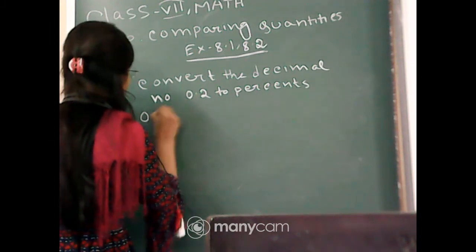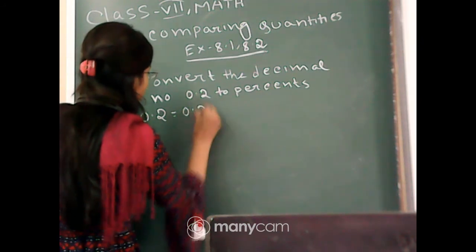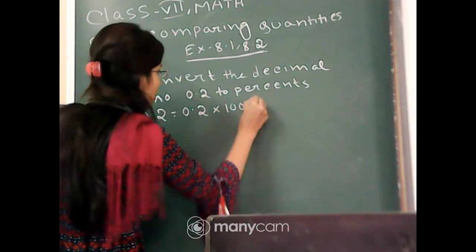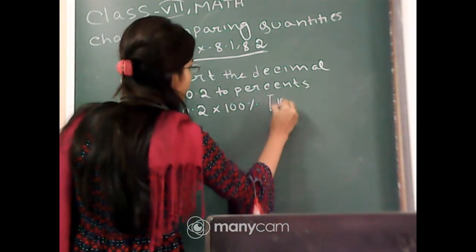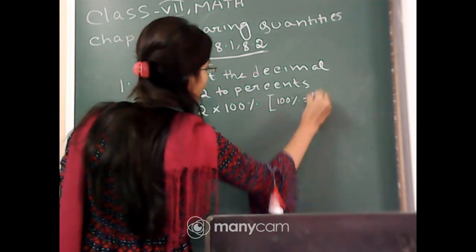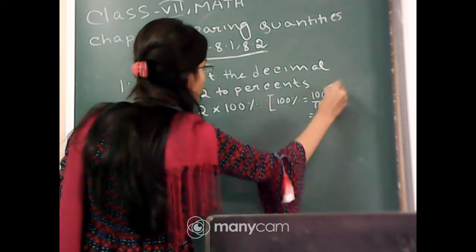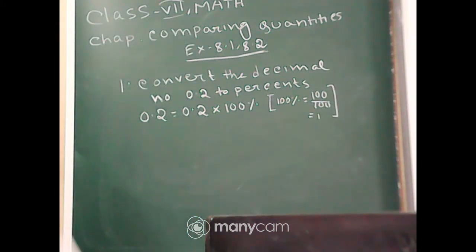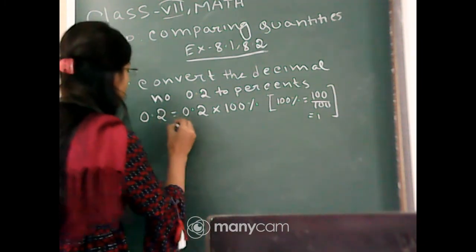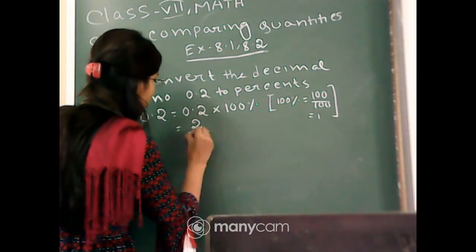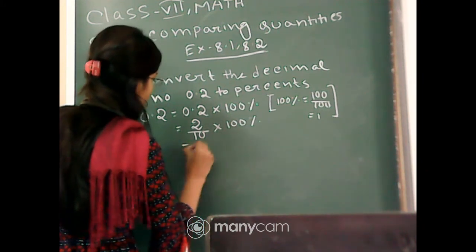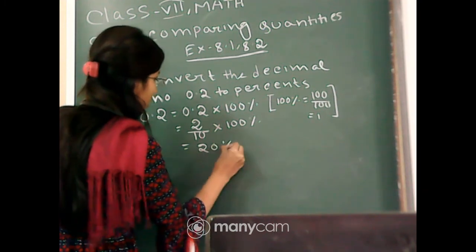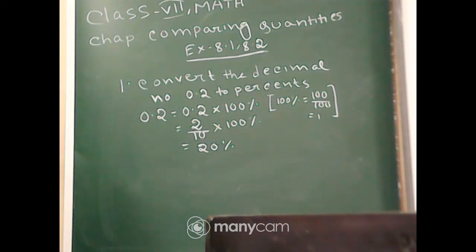0.2 is equal to 0.2 into 100 percentage. Since 100 percentage is equal to 100 divided by 100, that is 1, we can write 0.2 as 0.2 into 100 percentage. Now, 0.2 is equal to 2 divided by 10, into 100 percentage, and the final answer is 20 percentage.